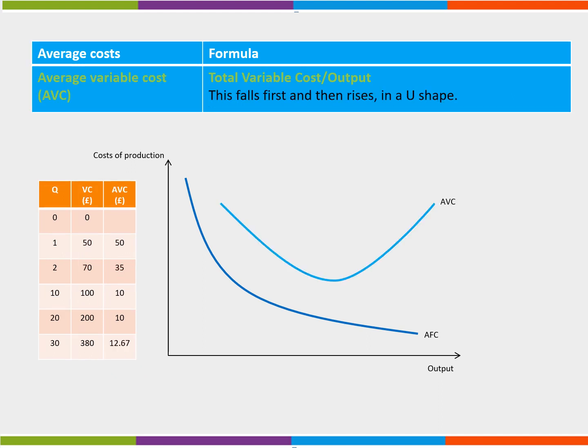Next we can bring in the average variable cost curve. This falls first and then rises in a U shape. This is due to at first the law of increasing returns to the variable factors of production such as labour and then due to diminishing returns.